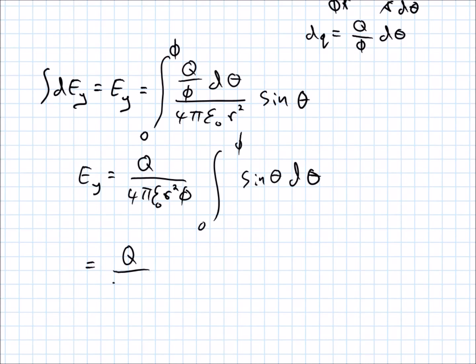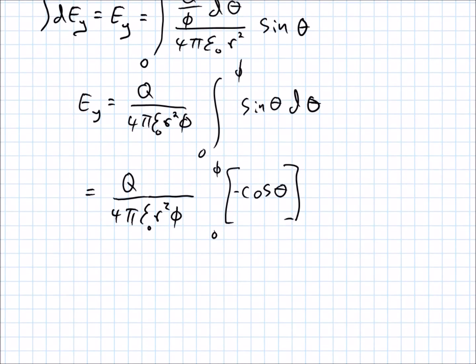So, this guy's got the stuff out front. From zero to phi of the cosine of theta, negative cosine of theta. Alright, and this is about it. I mean, we can plug in here, right? The cosine of zero is one, and so I guess I'll put it on top, because there's plenty of room up there. So, we've got Q, and then the negative out in front here, I guess. One minus cosine of phi, plugging in the limits there. Over 4 pi epsilon naught R squared phi.